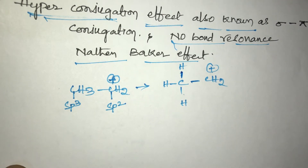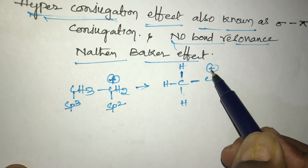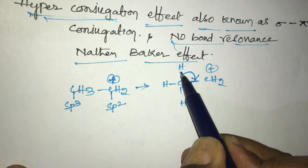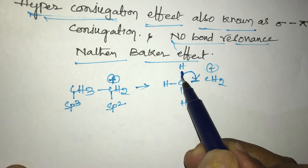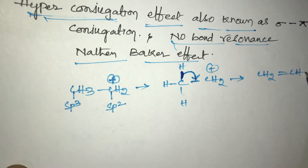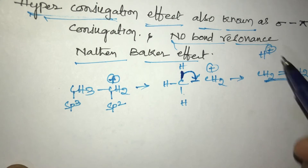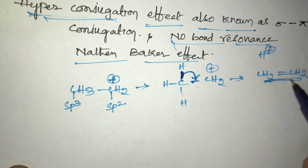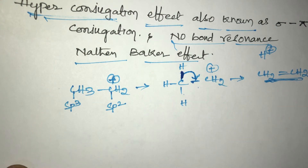In CH2+ one vacant p orbital is present. We can write CH3 — this carbon having three hydrogens — then CH2+. What is the hyperconjugation here? The delocalization of sigma electrons into the adjacent vacant p orbital. So here the complete transfer of sigma electrons occurs towards the empty vacant p orbital side, producing CH2=CH2 and H+.